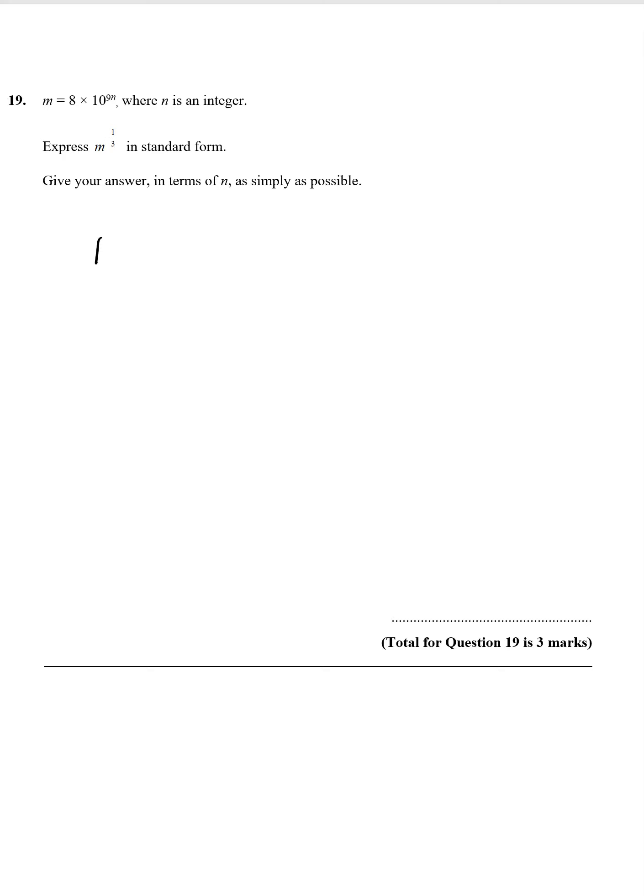So m to the minus 1 third. Because it's a minus, what we can do is 1 over, that gets rid of the minus. The third is the cube root. So basically we have that as a starting point. Now obviously that's not in its simplest form, so let's break it down a bit more. We know the cube root of 8 is a half.